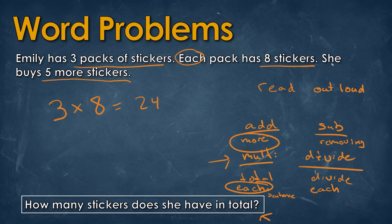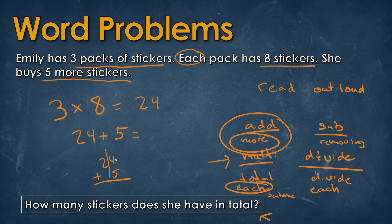Now that we have that, it says she buys five more stickers. So we know that she had 24 and she decided to buy five more. How many does she have in total? Well, 24 plus five — four plus five is nine, drop the two — the total is 29 stickers.